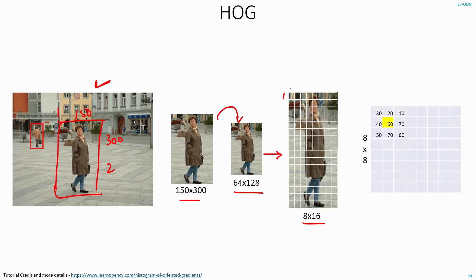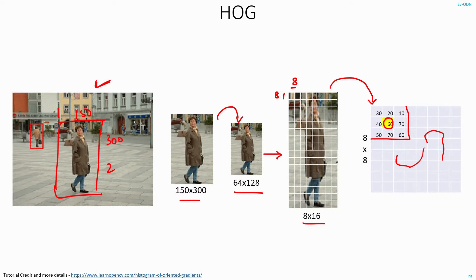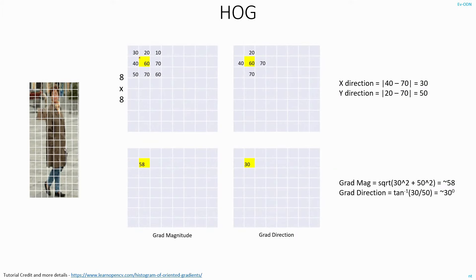So now each block in the grid will be 8 pixels by 8 pixels. This is what is shown here — one block of the grid is being shown. I have not shown all the pixel values here to make the explanation easier, but I have shown just a few of them. Now let's say I want to calculate the gradient magnitude and direction at this pixel position. For doing this, I have to calculate the difference in pixel intensities in both the x and y directions. For that, I need these 4 pixel values.